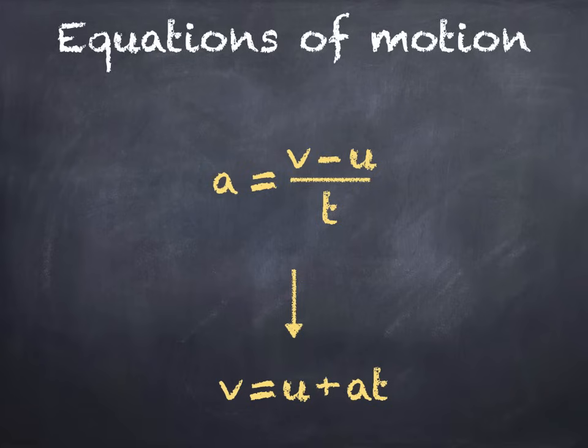Eventually we want to get v to be the subject of the equation, but we can't do that all in one step. We'll start here. So in the second line we have v minus u is equal to at.